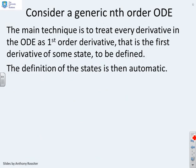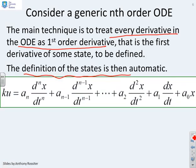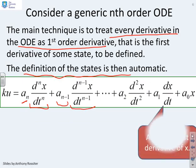How do we extend this to a generic nth order ODE? We use the same technique — we treat every derivative in the ODE as if it were a first order derivative. We define new states to make all the higher order derivatives look like first order derivatives, and the definition of the states becomes automatic. For an nth order ODE, dx/dt is already first order. For d²x/dt², same as before, we say this is the derivative of dx/dt. So if we define dx/dt as x1, then d²x/dt² becomes dx1/dt.